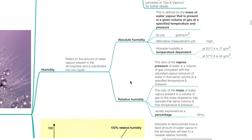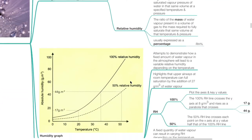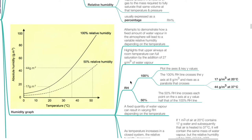Relative humidity is the ratio of the vapor pressure of water in a volume of gas compared with the saturated vapor pressure of water in that same volume at the specified temperature and pressure. It can also be defined in terms of mass of water as the ratio of the mass of water vapor present in a volume of gas to the mass required to fully saturate that same volume at that temperature and pressure. It is usually expressed as a percentage. The humidity graph demonstrates that when relative humidity is 100%, the RH line crosses the y-axis at 8 g/m³ and rises as a parabola, crossing 17 g/m³ at 20°C and 44 g/m³ at 37°C.